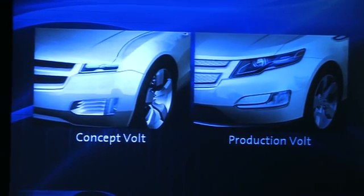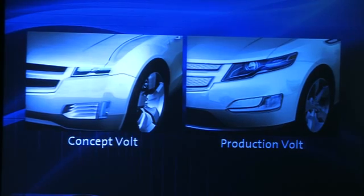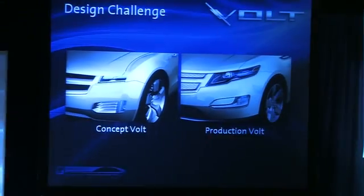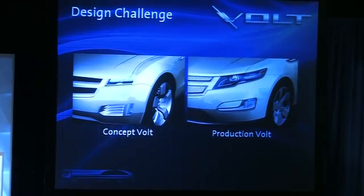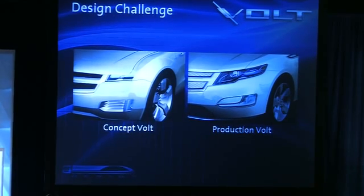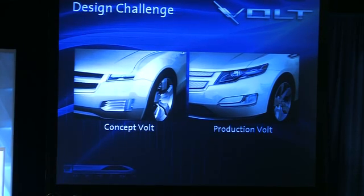The first thing you'll notice about the concept Volt is that the front end was very blunt and it had a very sharp crease on the front corner of the car. Now, if you know anything about aerodynamics, air does not like to go around sharp corners — it separates or becomes detached, it creates turbulence, and turbulence creates drag. The fundamental idea behind pushing a shape through the air is to make sure the air stays attached to the car as long as possible.